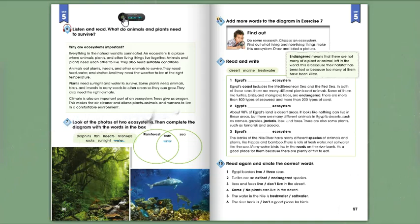Animals and plants need each other to live. They also need suitable conditions. Animals eat plants, insects, and other animals to survive. They need food, water, and shelter, and they need the weather to be at the right temperature. Plants need sunlight and water to survive. Some plants need animals, birds, and insects to carry seeds to other areas so they can grow. They also need the right climate.